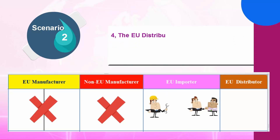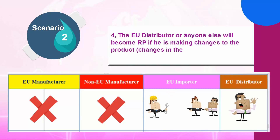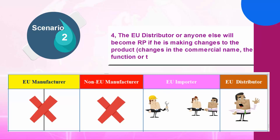Continuing Scenario 2: (4) The EU distributor or anyone else will become RP if they are making changes to the product — changes in the commercial name, the function, or the composition.